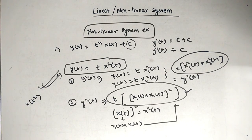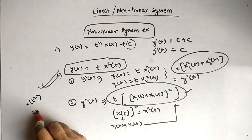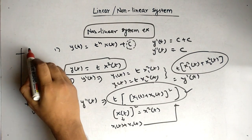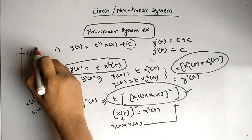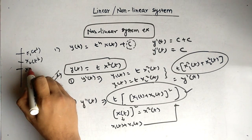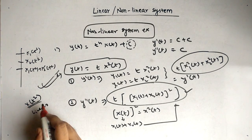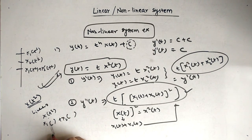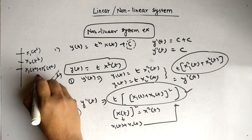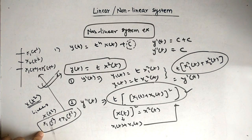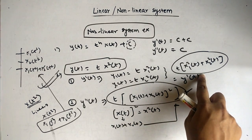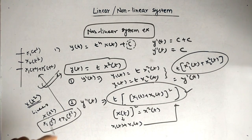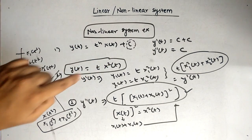Important distinction: x-squared of t and x of t-squared are different. If the equation were y of t equals t times x of (t-squared) — meaning the argument of x is t-squared — then it is linear. When you solve it, x1 of (t²) and x2 of (t²) simply add, and y-double-dash of t replaces x(t²) with x1(t²) plus x2(t²), which matches y-dash of t. So don't get confused between x-squared of t and x of t-squared.